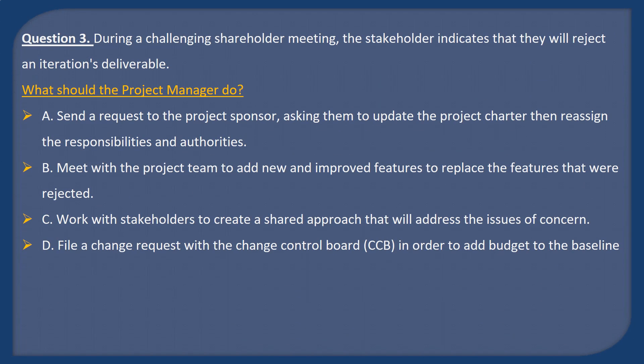Question 3. During a challenging stakeholder meeting, the stakeholder indicates that they will reject an iteration's deliverable. What should the project manager do? A: Send a request to the project sponsor asking them to update the project charter, then reassign the responsibilities and authorities.